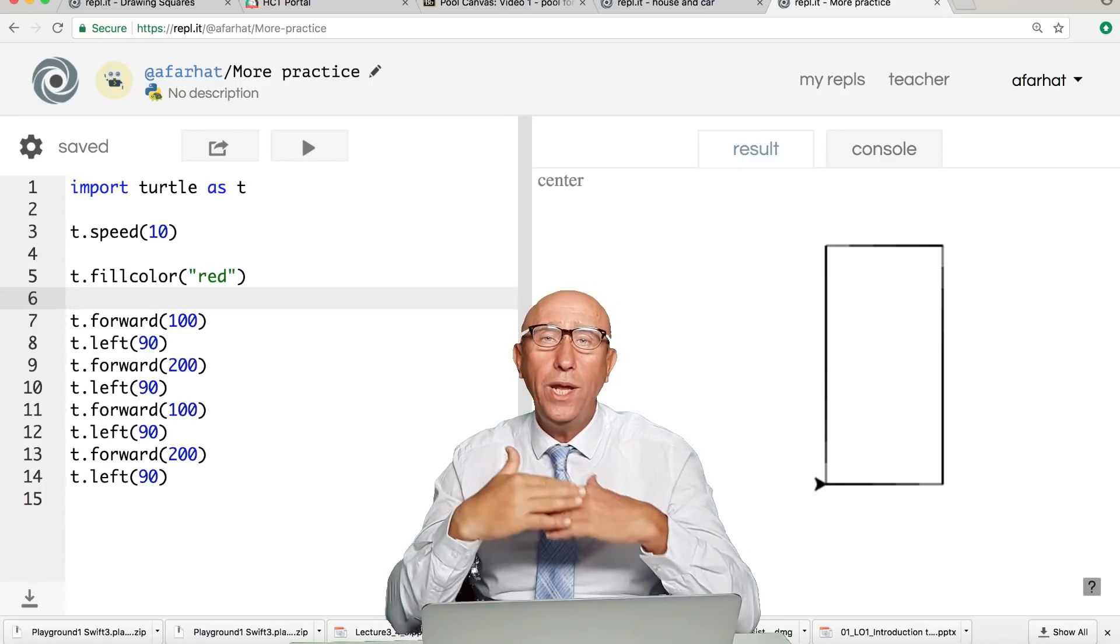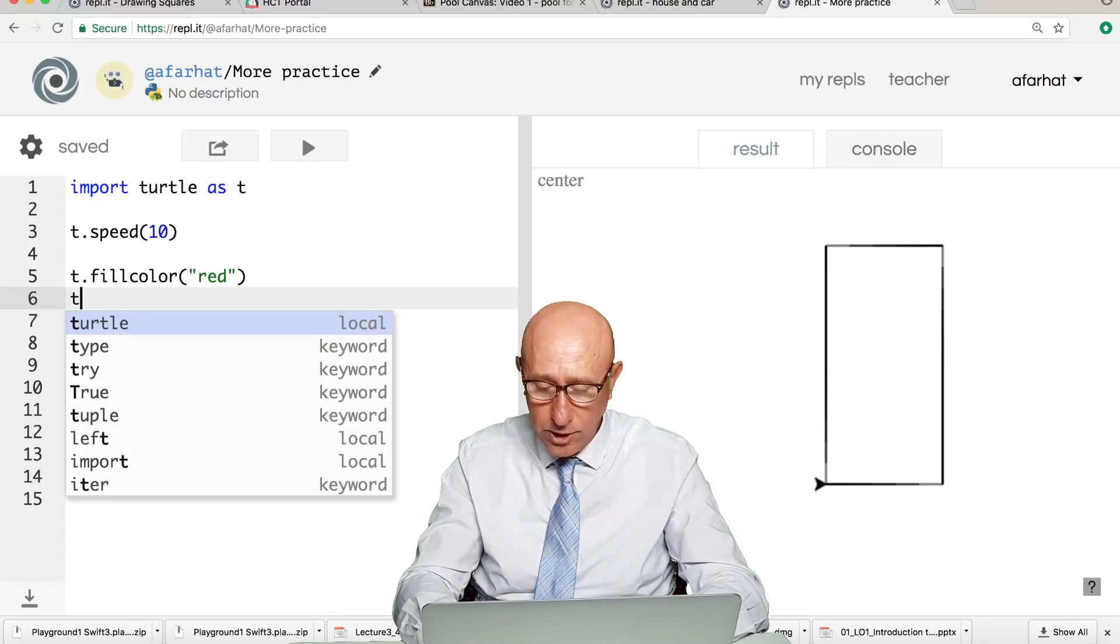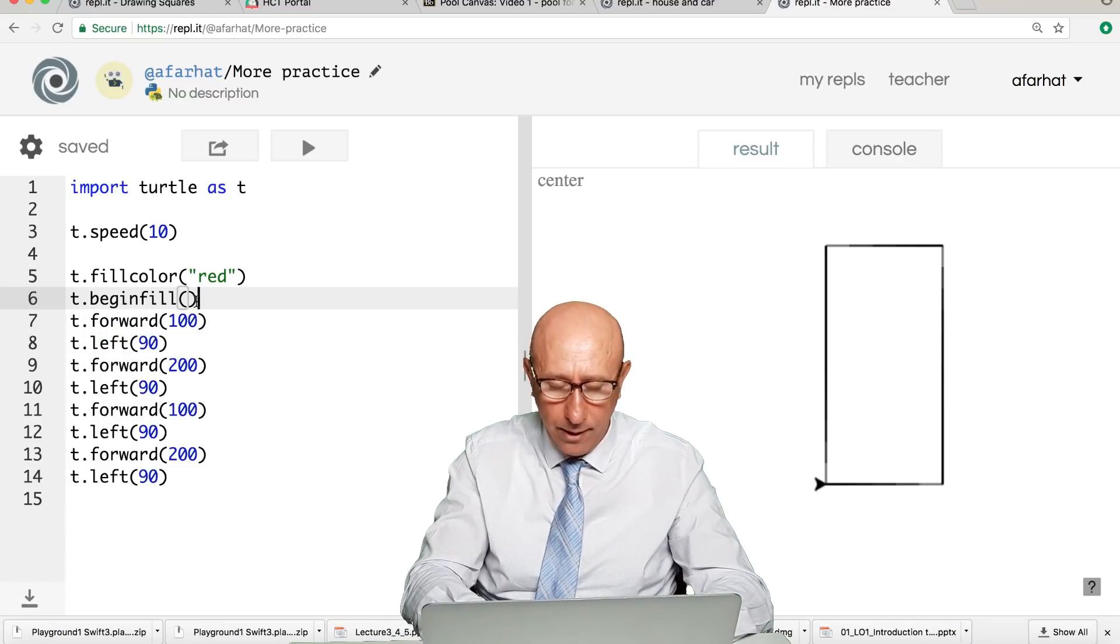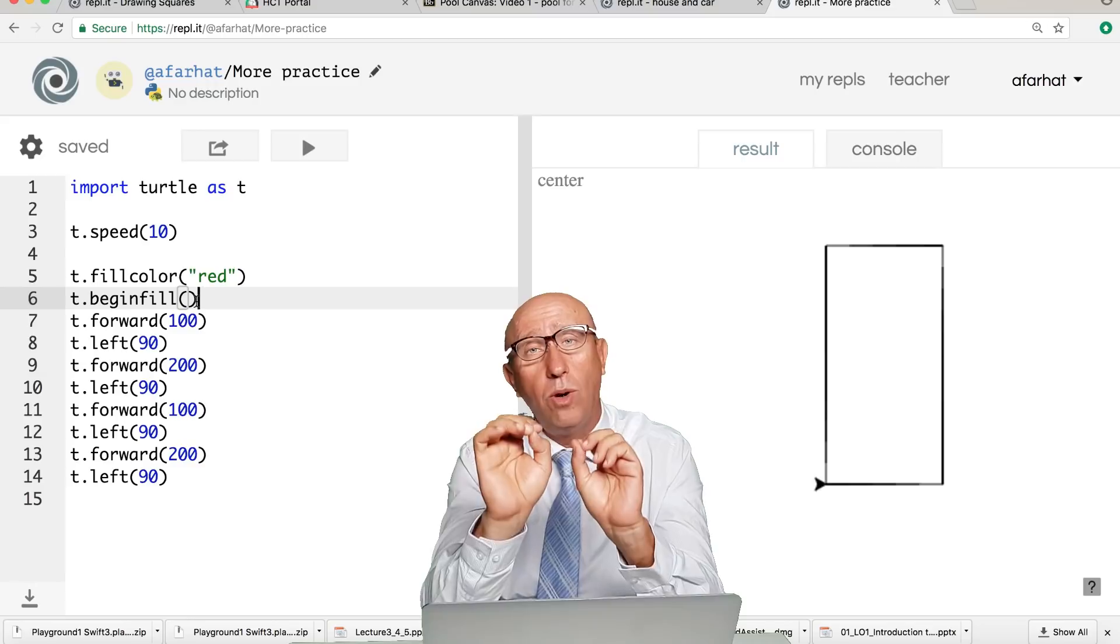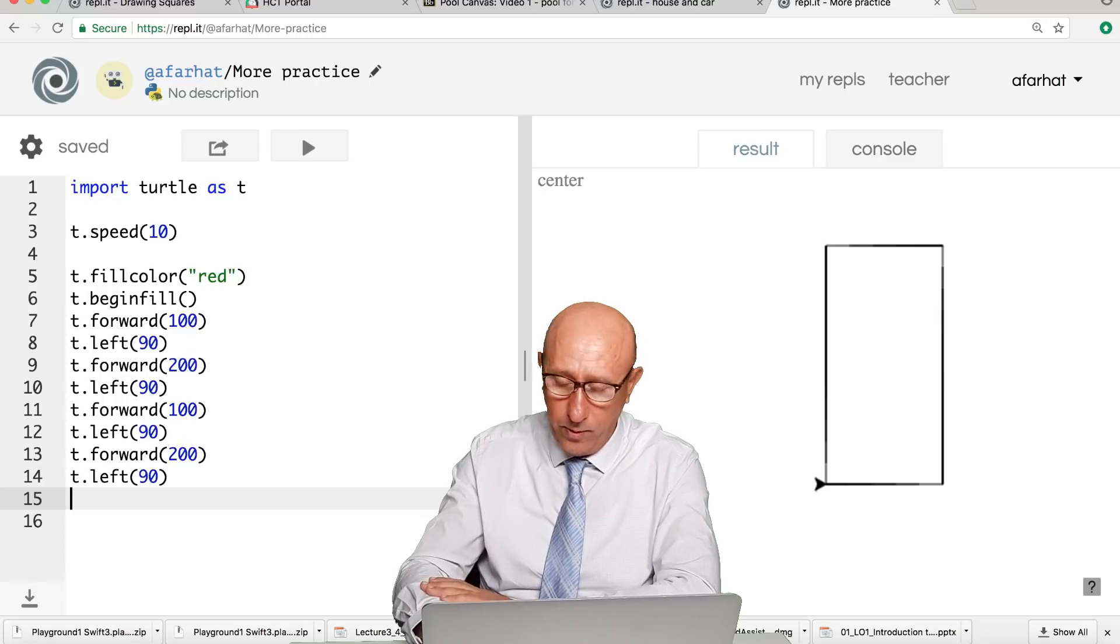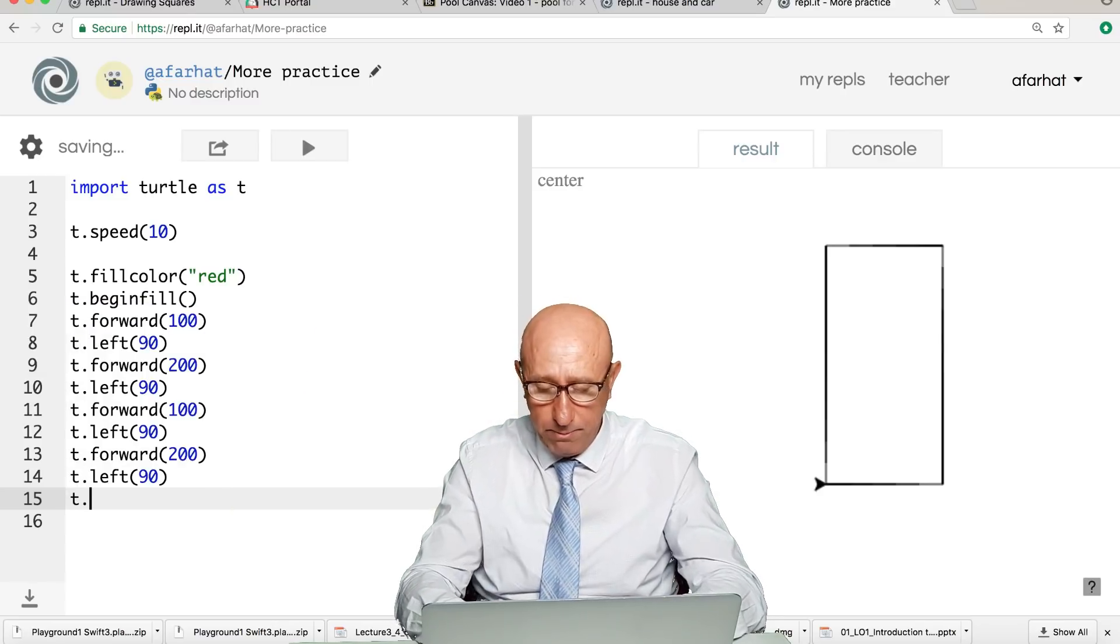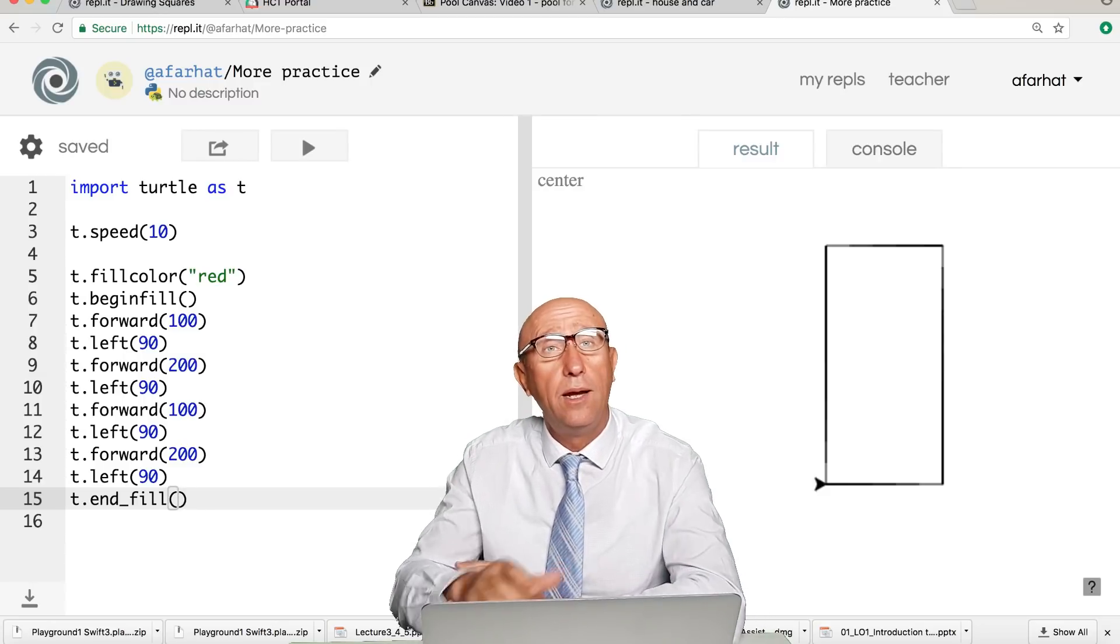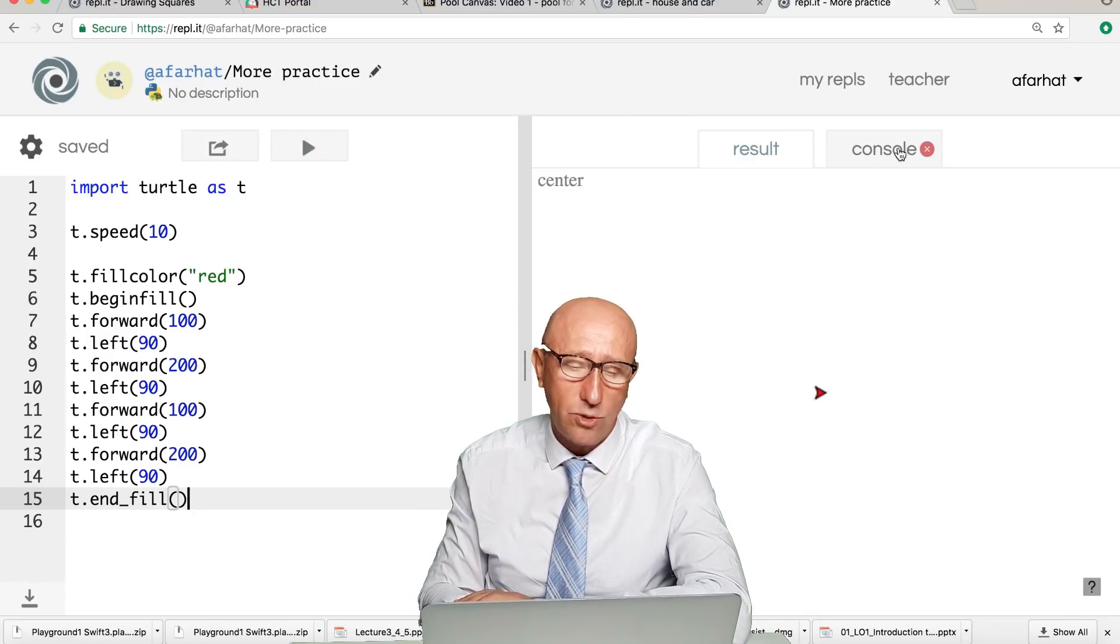The next thing to do is when do you want to start filling this rectangle or this building? You issue a command called begin_fill. And this command does not accept any parameters. So it's just saying, I'm signaling I want to start filling from this point onward. So you draw your shape, and at the end you say, I'm done drawing this side. I want to finish the coloring. So you issue another command, end_fill. And that will finish your building and color the inside of it.